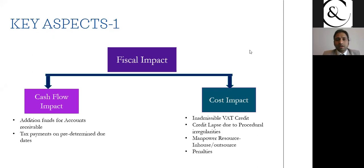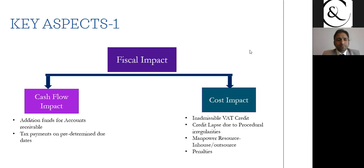In business, the favorable situation is that your debtors should always be more than your creditors. Through this aspect you can figure out the additional cash flow required. Typically for sales, companies provide credit facilities of 90 or 60 days or even more, but in taxation there is no credit facility with the tax authority.